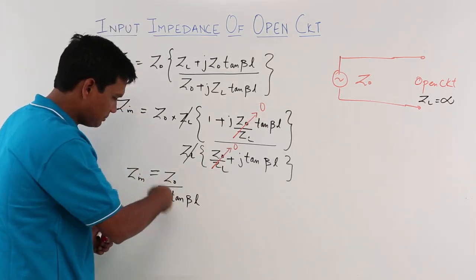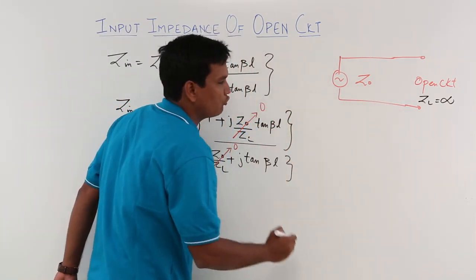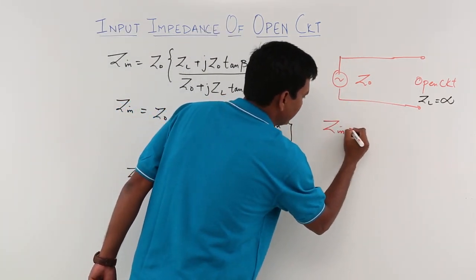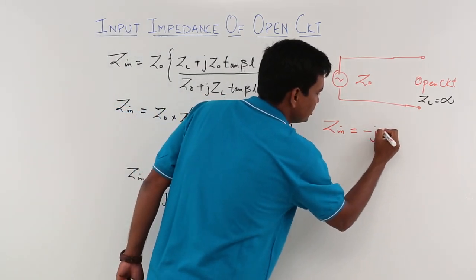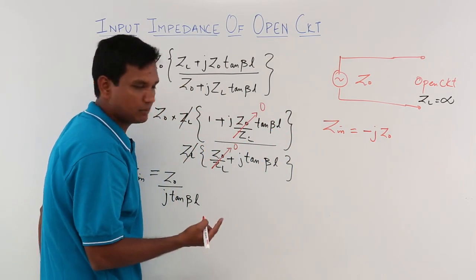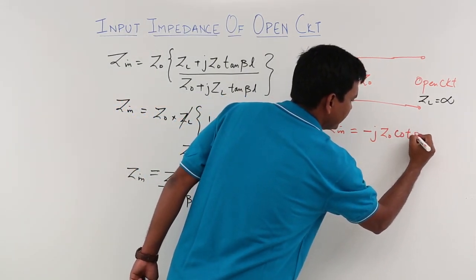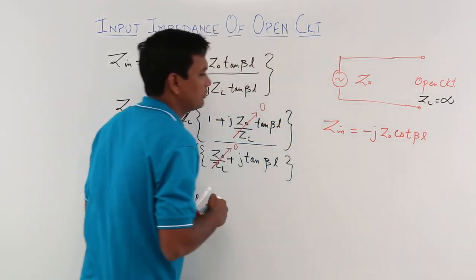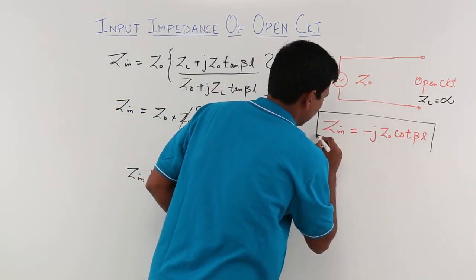If I simplify this further, my input impedance in case of open circuit would be, if I take J to the top, it will become minus J Z naught. 1 by tan is nothing but cot, so it becomes cot beta L and this would be my input impedance in case of an open circuit.